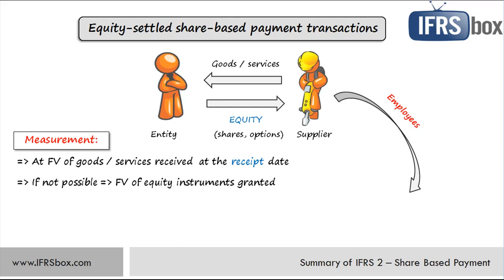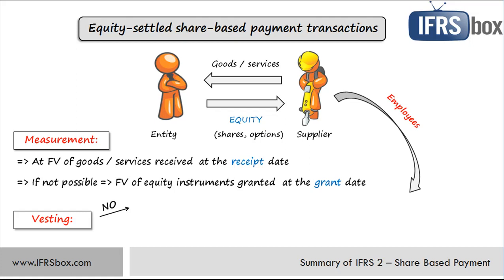So instead of determining the fair value of employee services, an entity should estimate the fair value of its own equity instruments granted. IFRS 2 provides whole guidance on how to do it. This fair value is estimated at the grant date, not at the receipt date, as these remunerations are usually provided in exchange for employee service over some period. There's also vesting conditions to bear in mind. If benefits are not vested — meaning they are granted immediately and the counterparty is not required to complete a specified period — IFRS 2 sees this remuneration as in return for past service, and therefore an entity shall recognize the services received in full at the grant date with the corresponding increase in equity.